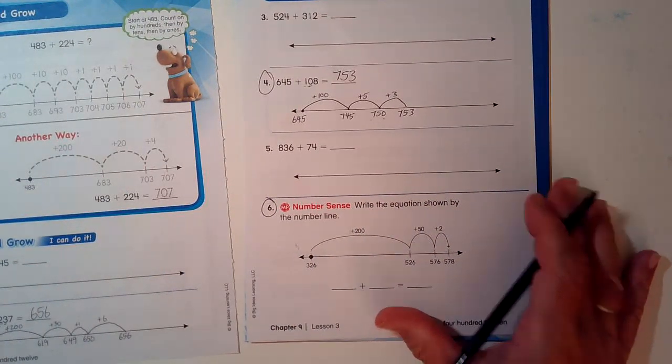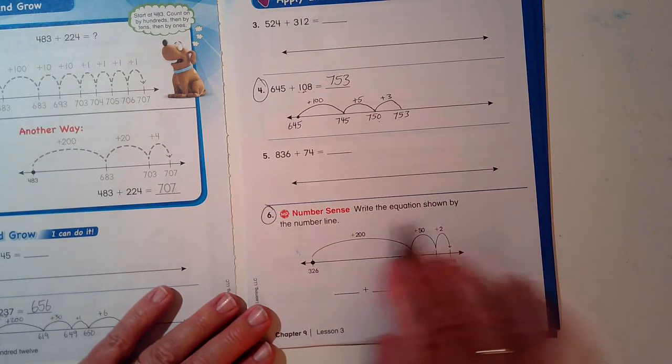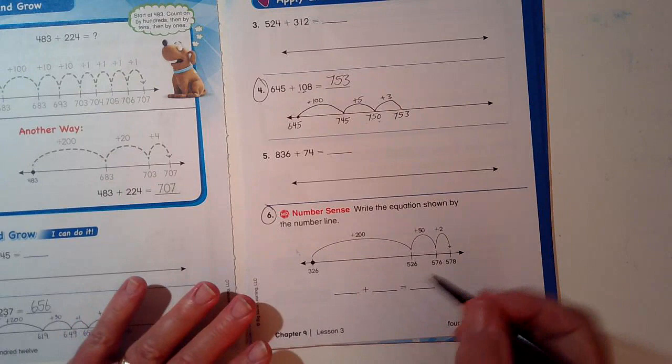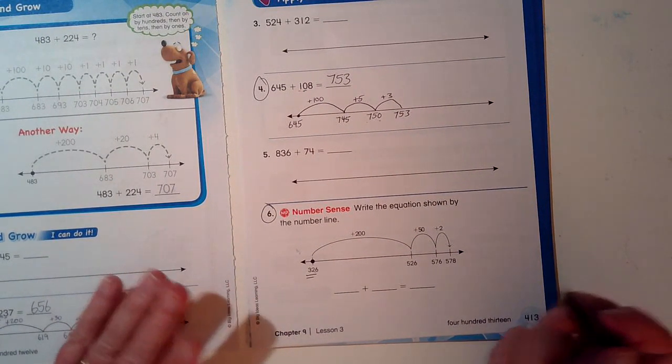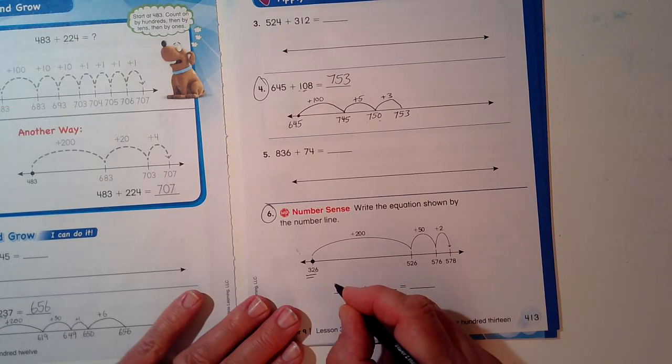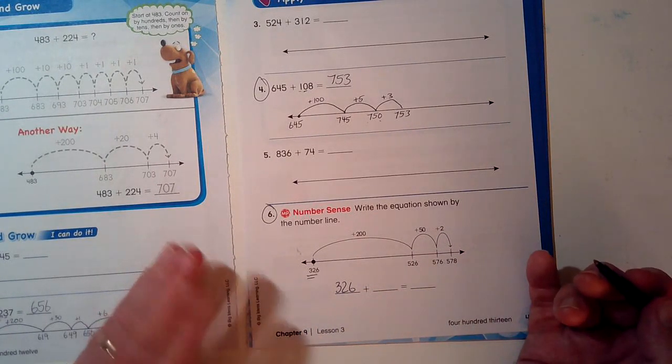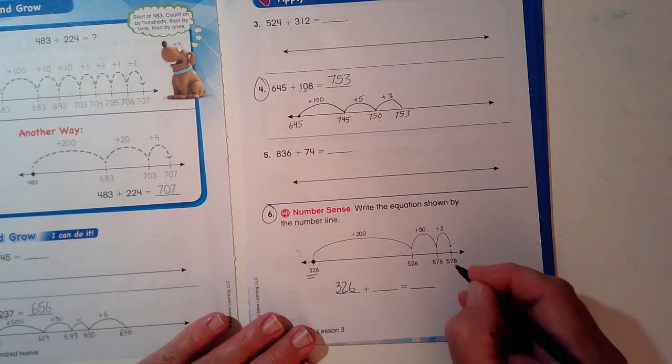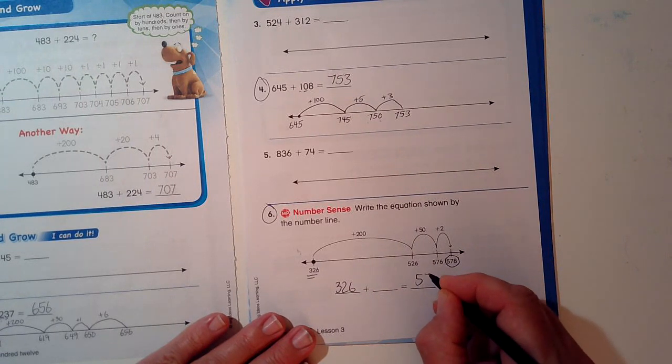Now let's look at problem number six, number sense. Write the equation shown by the number line. Now, the starting point, we know, because that's how you start with an open number line. 326 is where I started. The end problem I just showed you. I forgot over here. I remembered here. That's where we stop. That's where we end up. 578.